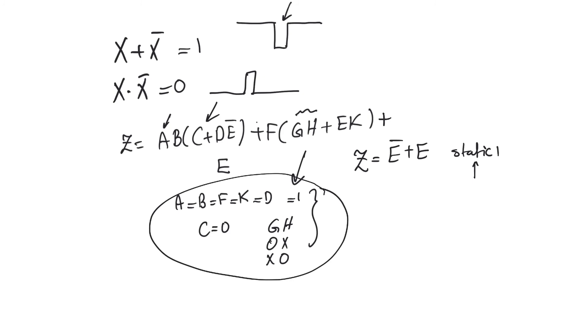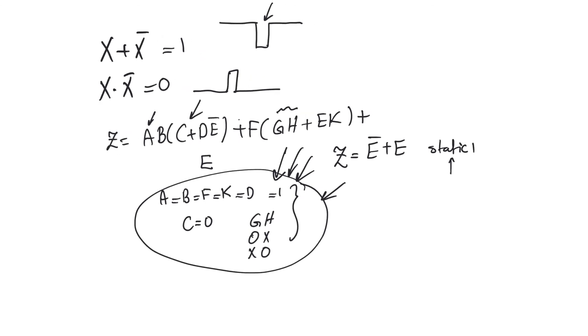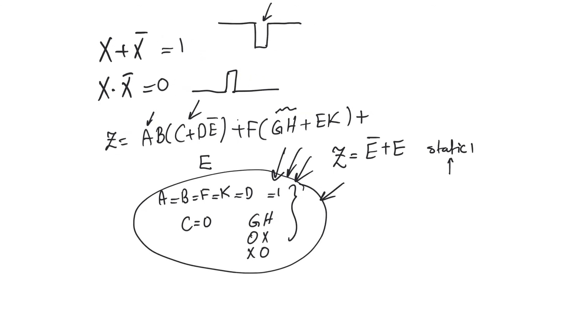So if we add a product term that forces the function to be 1 for this combination of the other variables, we will not be changing the function. We will not be changing the functionality of the circuit because the functionality of the circuit produces a 1 for this combination of the other variables regardless of the value of E. On the other hand, we will be masking the glitch because we will be forcing the function to become 1 regardless of the value of E. And so E can glitch all it likes. This additional term is going to force the function to become 1.